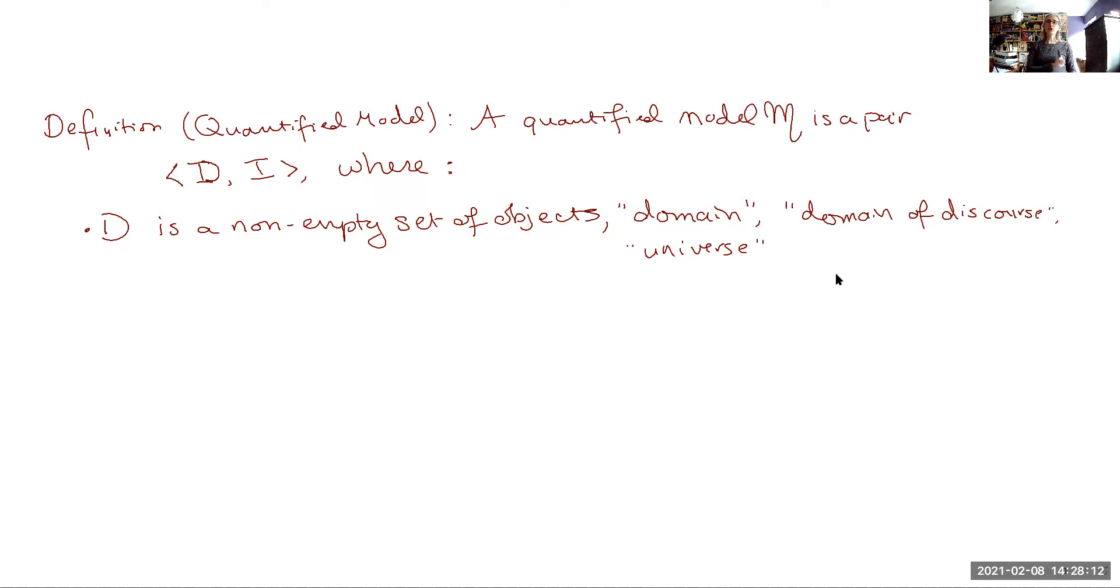Now the non-empty part is important. There has to be at least one object in the set and that is because without having any objects, a lot of our truth conditions stop making sense. The definitions that I'm going to be giving in the next couple of videos are only sensible definitions if we are talking of at least one object. But it's important to notice that we are making this assumption because this is not a neutral assumption. It's the one metaphysical assumption that classical logic makes.